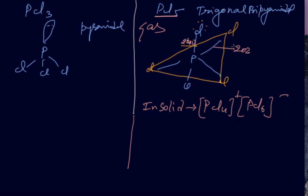It has been asked in a number of exams: the equatorial is 202 picometers. Why is the axial greater? Due to the repulsion. Due to the repulsion, axial bond length is greater in PCl5. It is trigonal bipyramidal, sp3d hybridization.